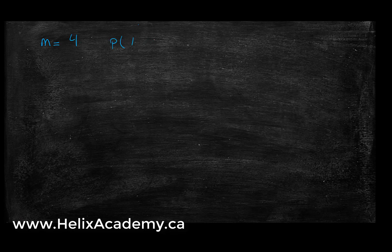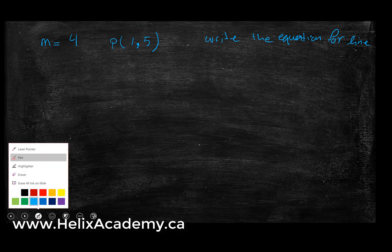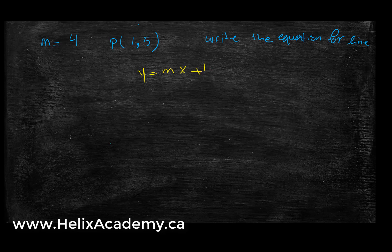Now there's another way you might be given information — maybe one point and the slope. So you're given the slope to be 4 and a point on the line to be (1, 5). How do I write an equation for a line in this case?